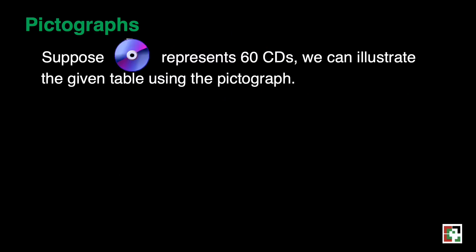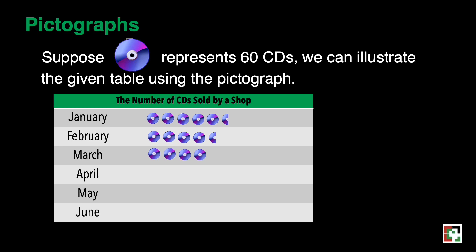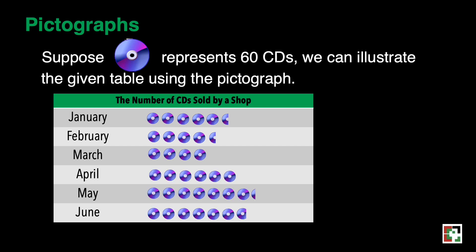Let us have some examples. Suppose one symbol represents 60 CDs. We can illustrate the given table using the pictograph. We have here the number of CDs sold by a shop for January, February, March, April, May, and June. Based on the pictograph, the highest sales of CDs were recorded in May, the least sales in March, sales from March to May were continuously increasing, and there were about 410 CDs sold in June.